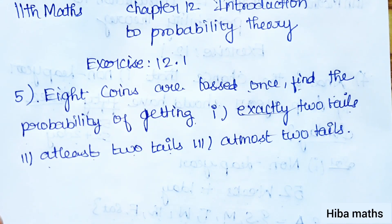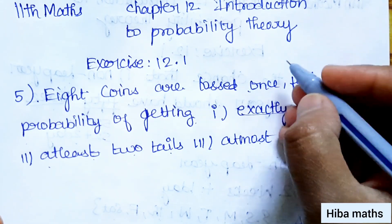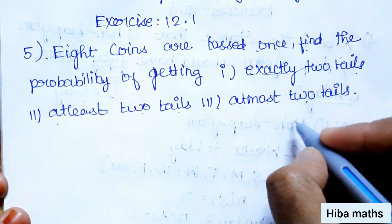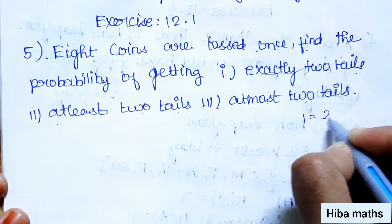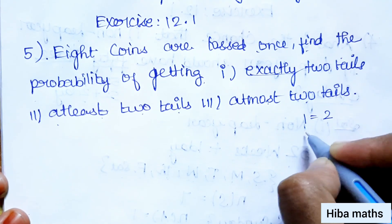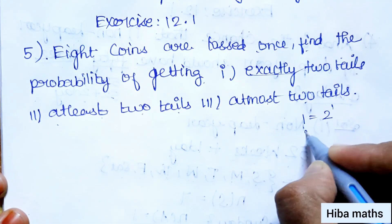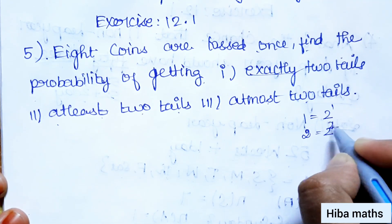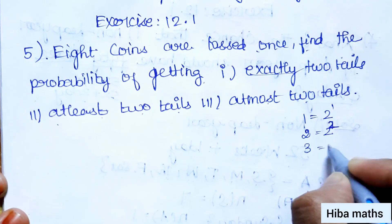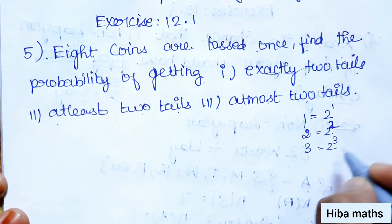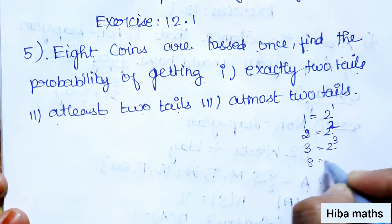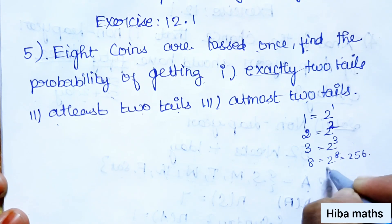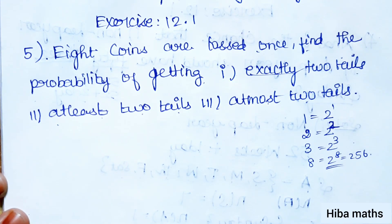8 coins are tossed. If you have a sample space for 8 coins, there is no simple listing. If you have 1 coin tossed, there are 2 probabilities — 2 power 1. 2 coins are tossed: 4 probabilities, 2 power 2. 2 power 3 is 8. So 8 coins give 2 power 8, that is 256.